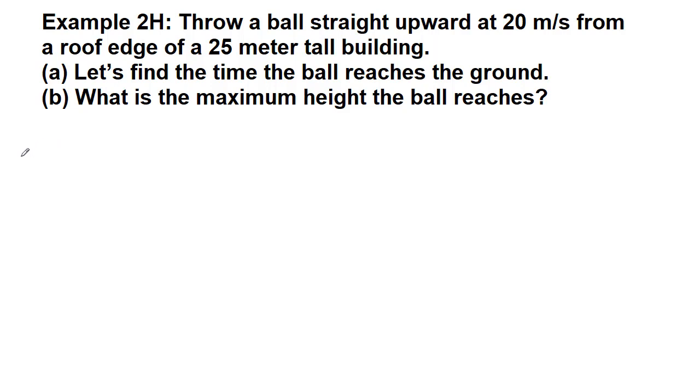We've got our problem-solving process for part A. The very first thing we do is draw a picture. Here is our building. We are here at the top and the ball is here at the top. We throw it upwards. The initial velocity that we give it is upwards. Gravity is always working against us though. And this height of the building that we're told is 25 meters.